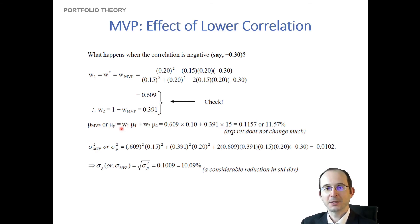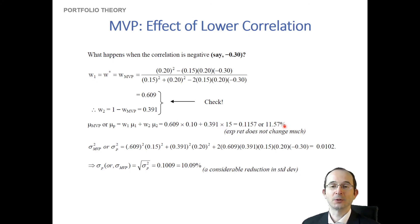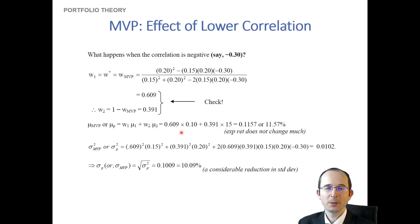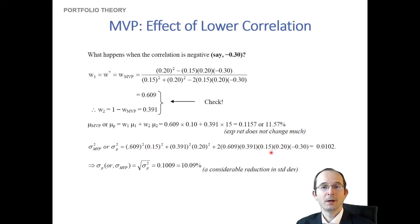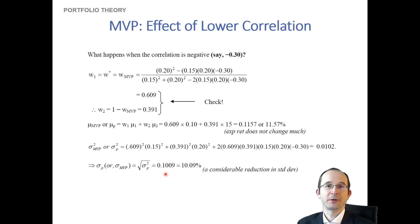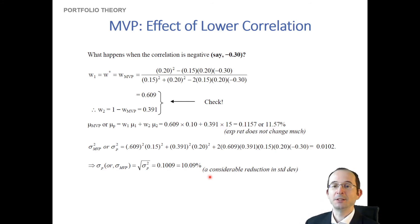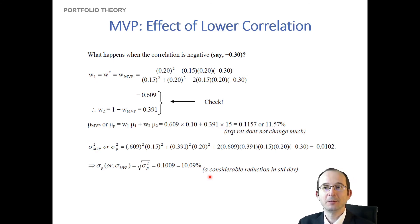The expected portfolio return is 11.57%, not too different from before, because the returns on the individual assets haven't changed — only the correlation and consequently the weights have changed, and those didn't drift much either. Plugging all values into the portfolio variance formula and taking the square root gives a standard deviation of only 10.09%, a substantial reduction entirely due to the negative correlation between the two assets.